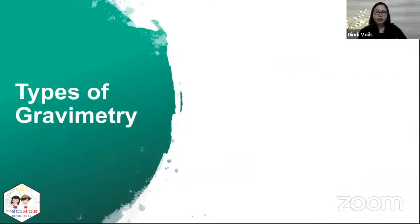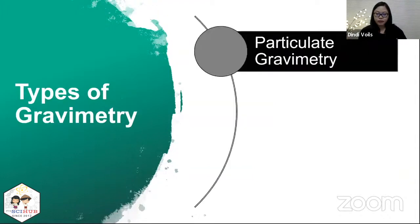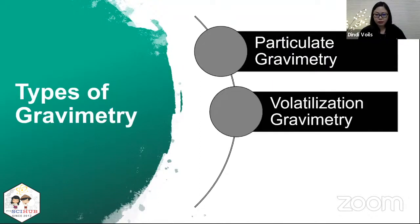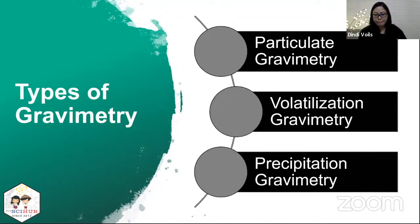There are three types of gravimetry. The first is particulate gravimetry, the second is volatilization gravimetry, and the third is precipitation gravimetry.